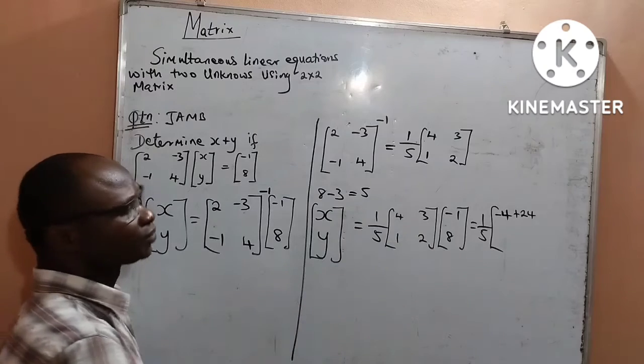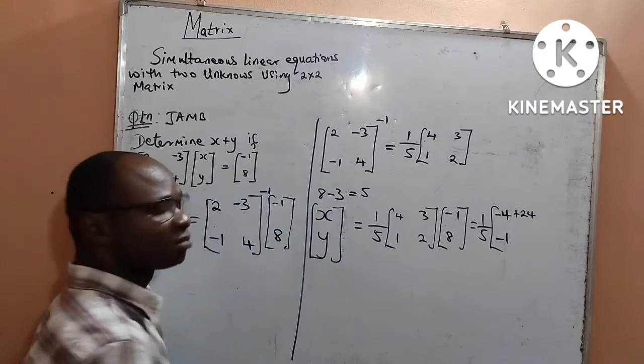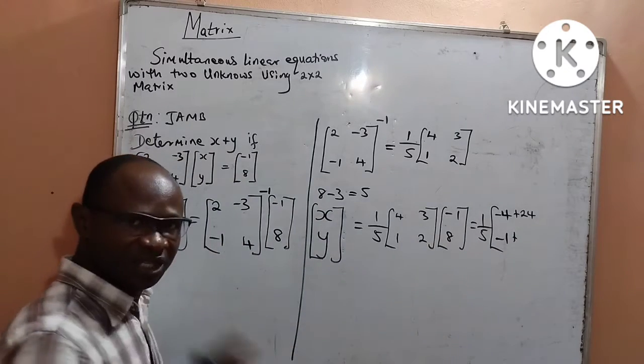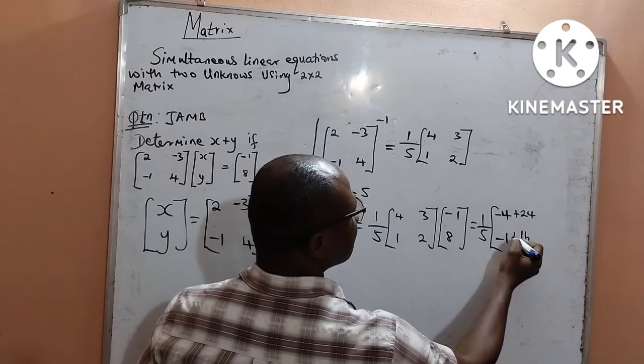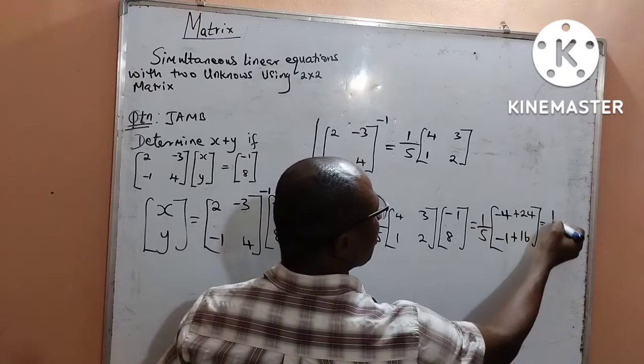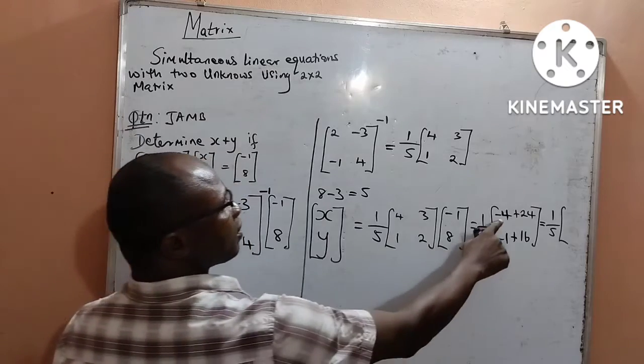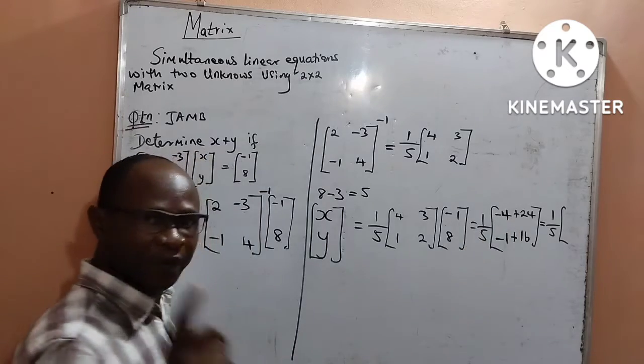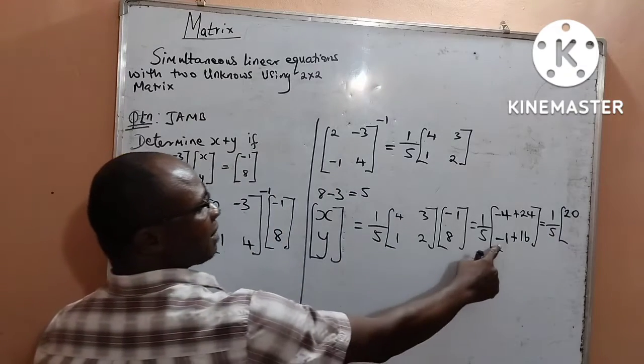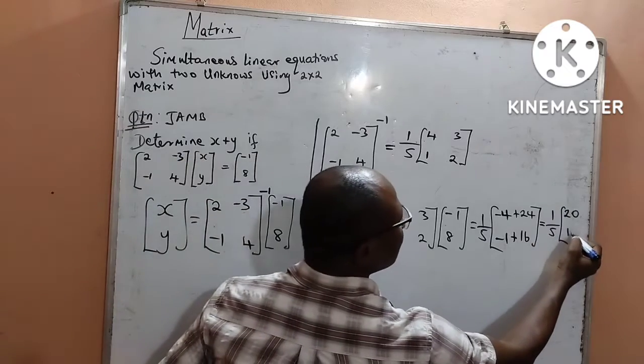I come to the second row. 1 times minus 1 will give me minus 1, plus 2 times 8 is going to give me 16. What I have now is 1 over 5. Then, minus 4 plus 24 will give me 20. Also, minus 1 plus 16 will give me 15.